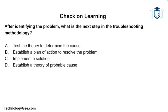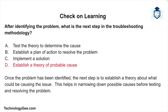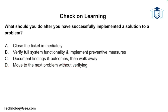Question two: after identifying the problem, what is the next step — test the theory to determine the cause, establish a plan of action, implement a solution, or establish a theory of probable cause? The correct answer is establish a theory of probable cause. Once the problem is identified, the next step is to develop a theory about what could be causing the issue, helping to narrow down possible causes before testing and resolving the problem.